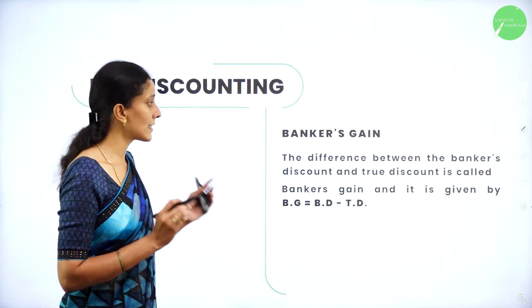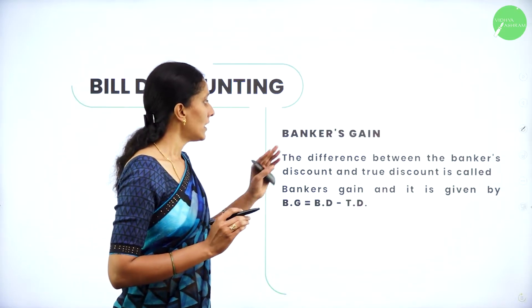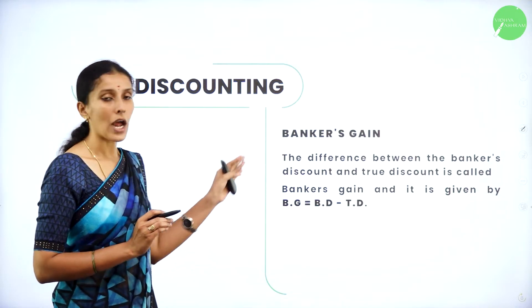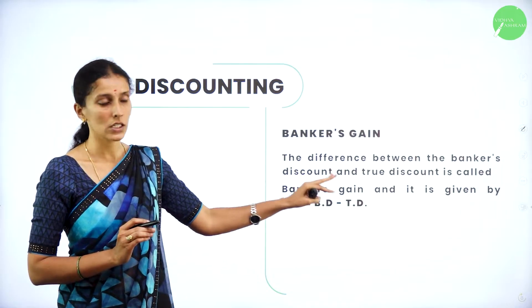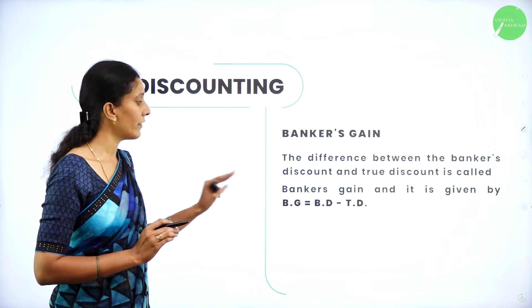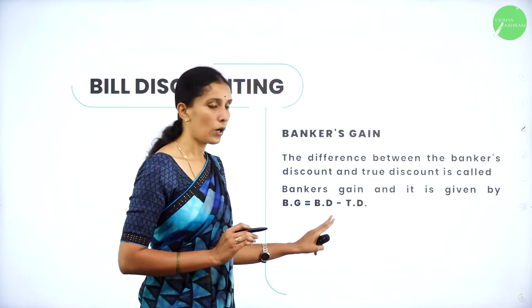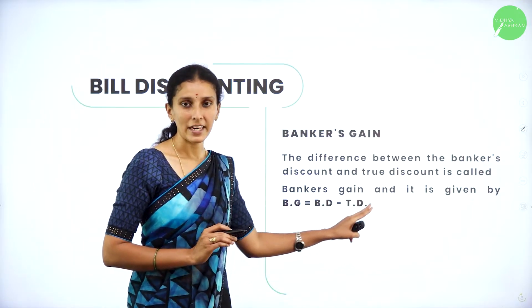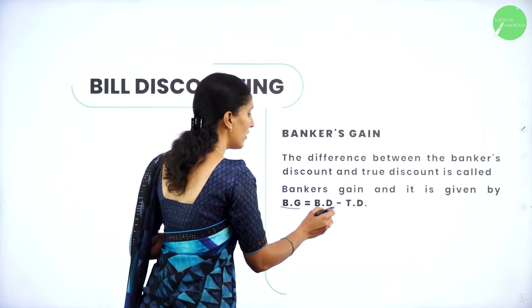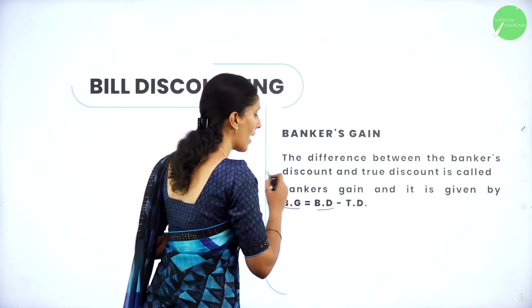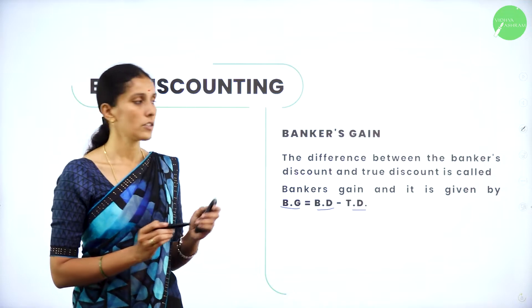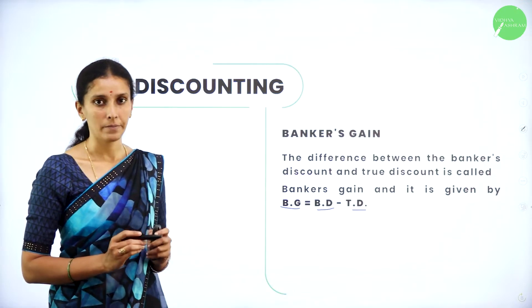Next is banker's gain. The difference between the banker's discount and the true discount is called banker's gain, given by BG = BD − TD. So banker's gain is the difference of banker's discount and true discount.